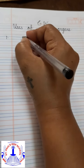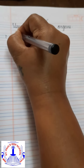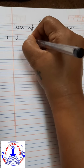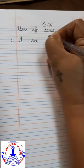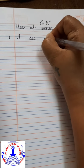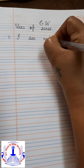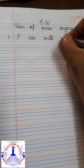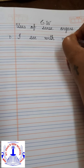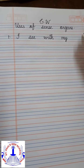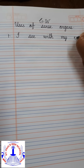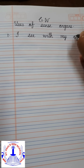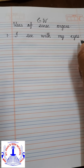First one: I see with my eyes. S-E-E, see. W-I-T-H, with. M-Y, my. E-Y-E-S, eyes. I see with my eyes.